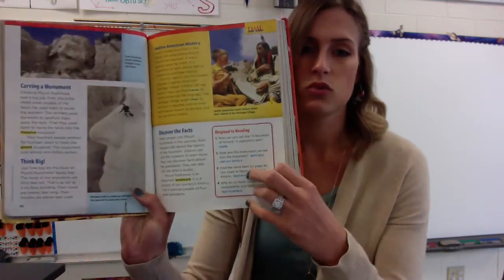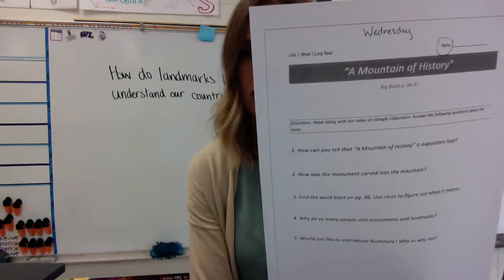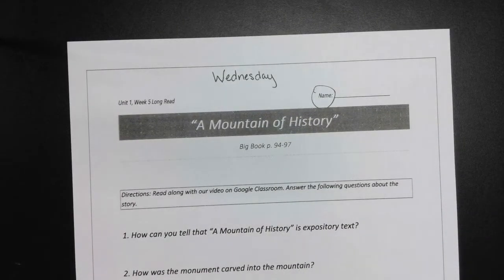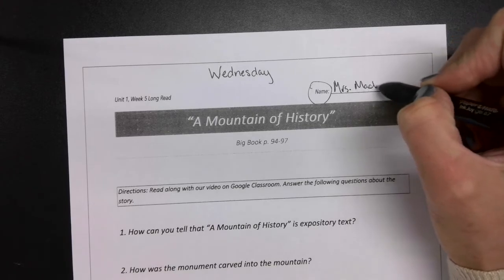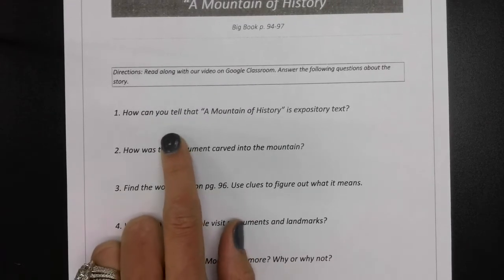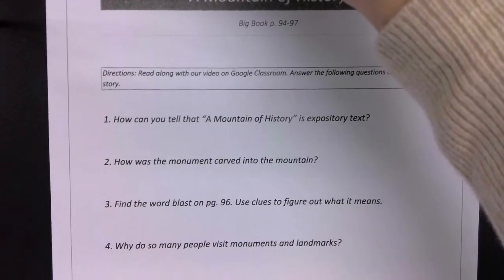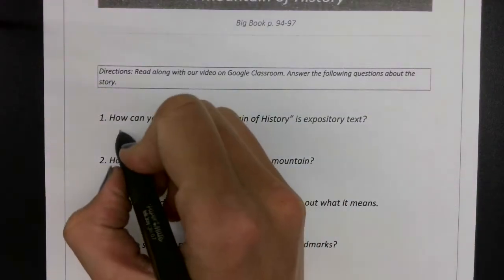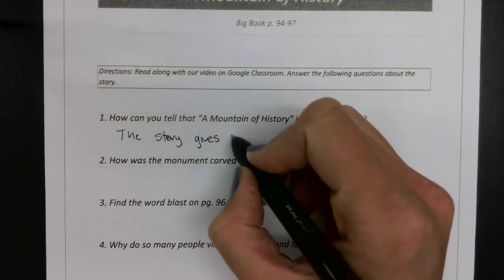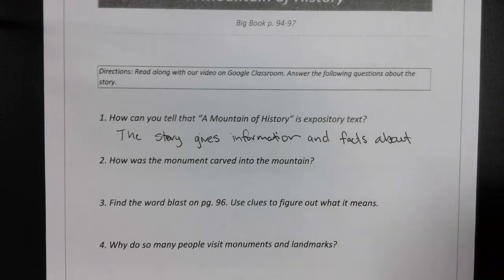Now we're going to jump to do our worksheet. It should have been in your Wednesday folder. Make sure you've got your name on your worksheet. First question: How can you tell that Mountain of History is an expository text? Well, we learned that expository texts give facts and details, and that's what this story did — it gives information and facts about Mount Rushmore. Note that Mount Rushmore is a place name, so both the M in Mount and the R in Rushmore are capitalized. Make sure you've got a period at the end.